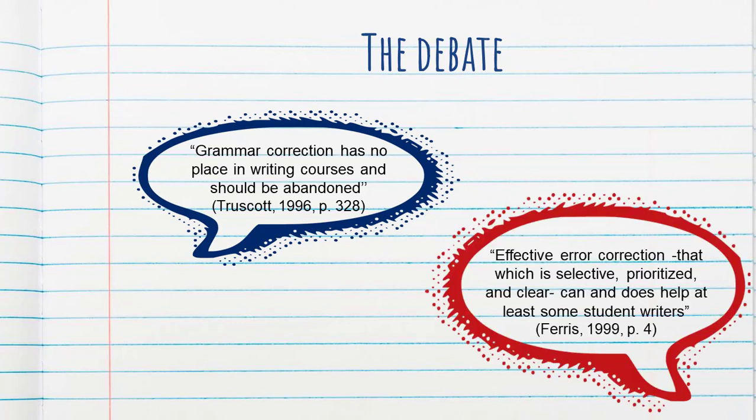And on the other hand, we have Dana Ferris saying that effective error correction, that which is selective, prioritized, and clear, can and does help at least some student writers.